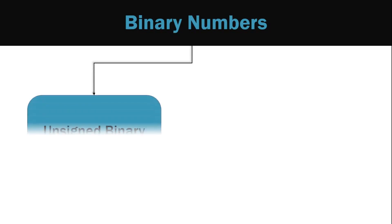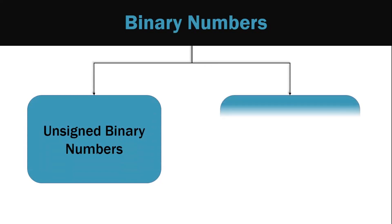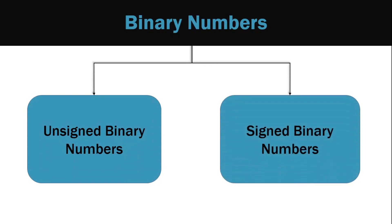Binary numbers are of two types. Unsigned binary numbers are only positive numbers, but using signed binary numbers we can represent both positive as well as negative numbers. In the decimal number system, positive and negative numbers are represented using the plus or minus sign, but in binary number system, as we are dealing with only ones and zeros, the negative numbers are represented in a different way.